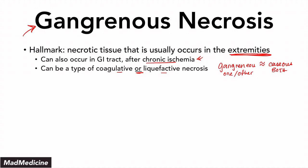Coagulative and liquefactive necrosis play a big role in gangrenous necrosis. This is often seen in diabetics, who have a propensity to develop neuropathy because of such high levels of glucose in their bloodstream. This diabetic neuropathy causes patients to not feel when they get hurt. When they have a cut or bruise and an open wound, it gets infected, and that ends up leading to gangrene and gangrenous necrosis.